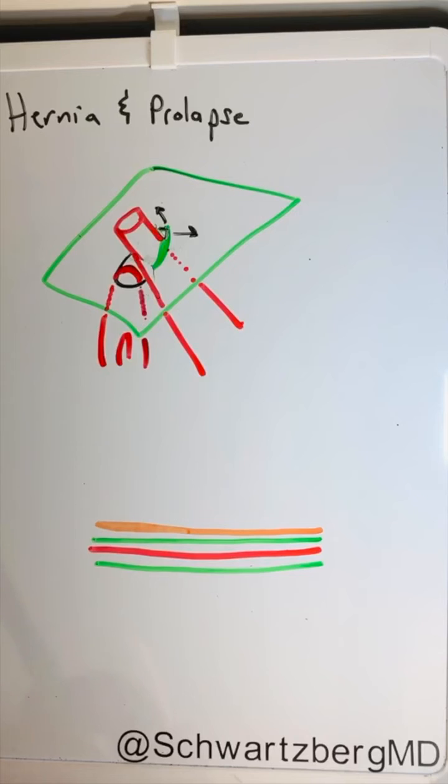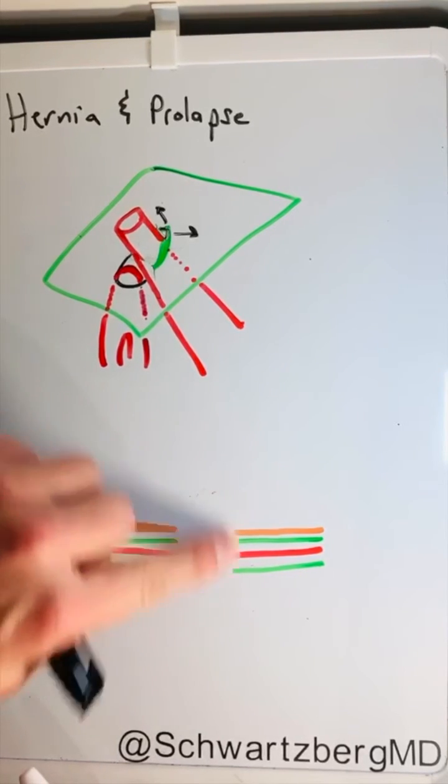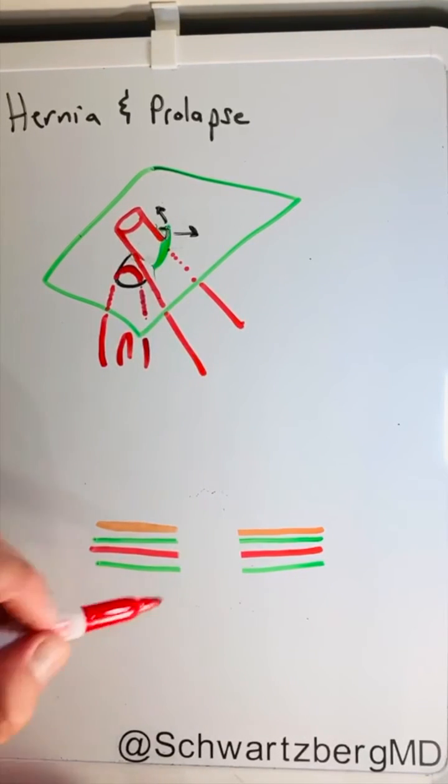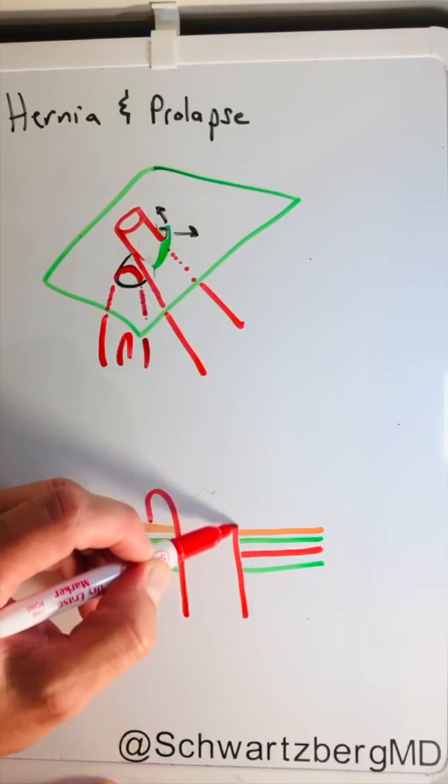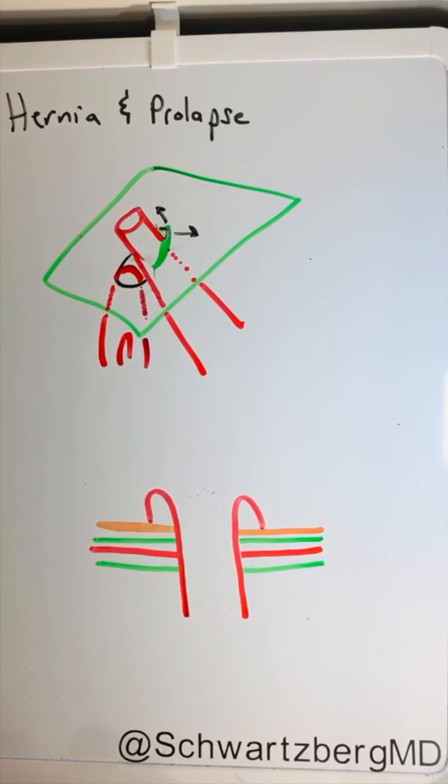A prolapse - if we're going all through the layers of the abdominal wall, we take our bowel and we bring it through. It's circumferential 3D and you fix the bowel to the skin.